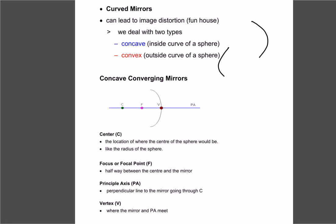A couple of key definitions: we think of the center as being the center of the sphere if we extended the mirror into a full circle. The focus point ends up being halfway — so the focus is halfway of that distance. That's a key thing to remember. The principal axis is just a horizontal line drawn through the center and focus point, and the vertex is where the mirror meets the principal axis.